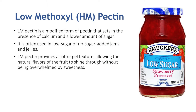Low-methoxyl pectin is a modified form of pectin that sets in the presence of calcium and a lower amount of sugar. It is often used in low-sugar or no-sugar-added jams and jellies. LM pectin provides a softer gel texture, allowing the natural flavors of the fruit to shine through without being overwhelmed by sweetness.